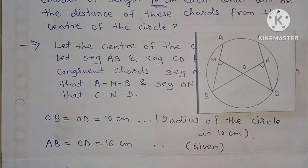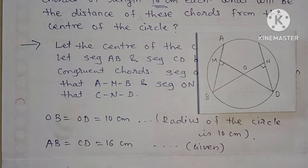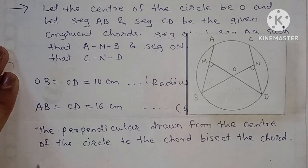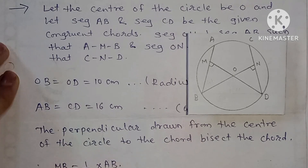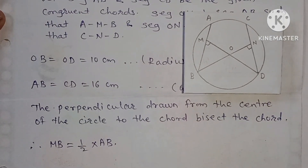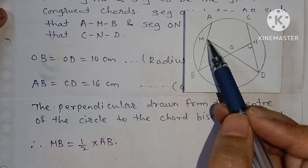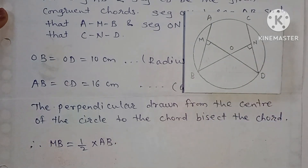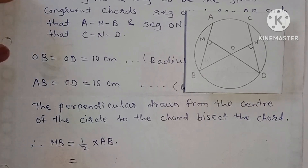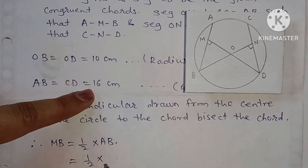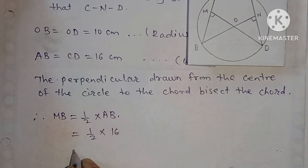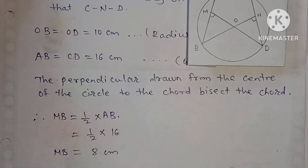The perpendicular drawn from the center of the circle to the chord bisects the chord. Therefore MB = half of AB. Half of AB: since AB = 16, half of 16 is 8. So MB = 8 centimeters.